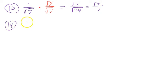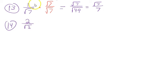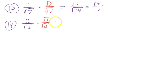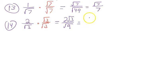For 2 over the square root of 3, rationalize by multiplying by √3 over √3. Straight across the top gives 2√3. Straight across the bottom gives √9, which is 3. The answer is 2√3 over 3.